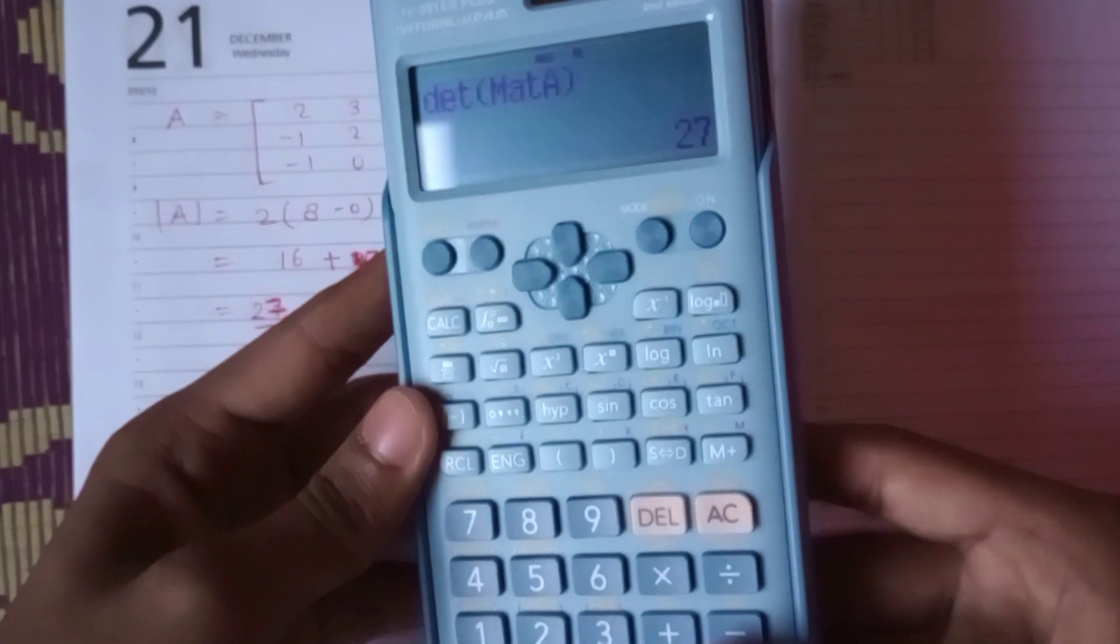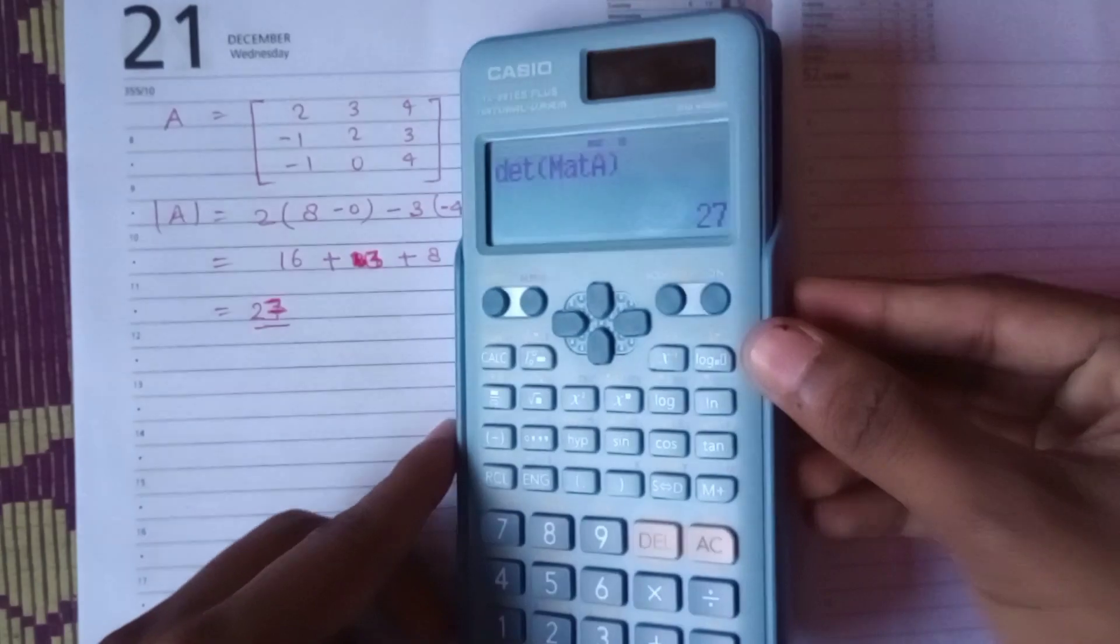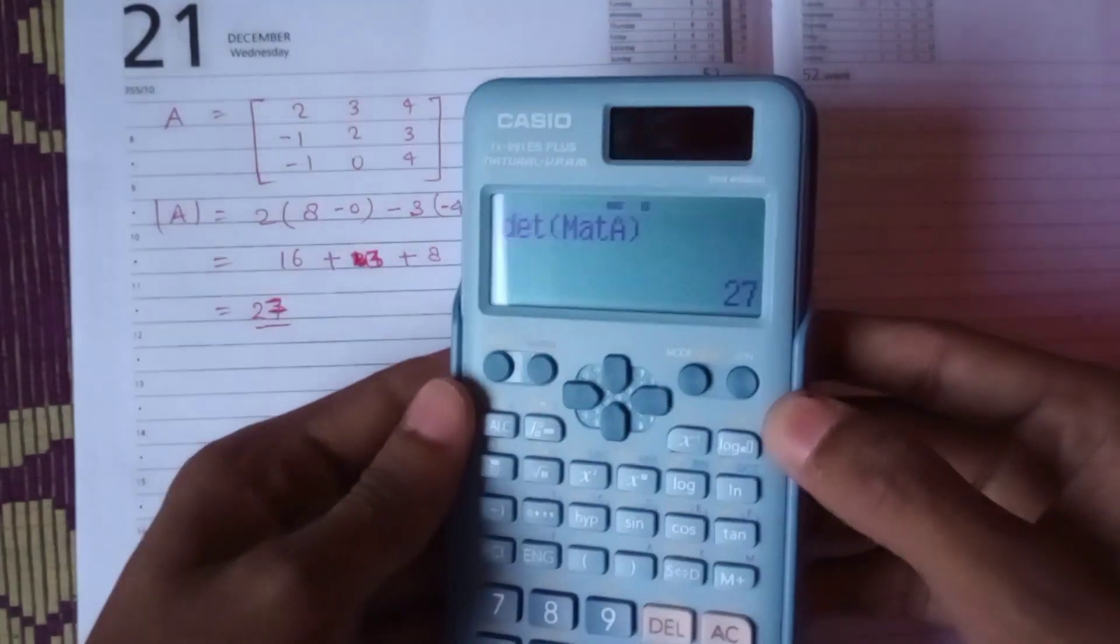Just enter equals to, that is 27, and we got 27. The answer we got is correct, the calculator is also correct. Thank you.